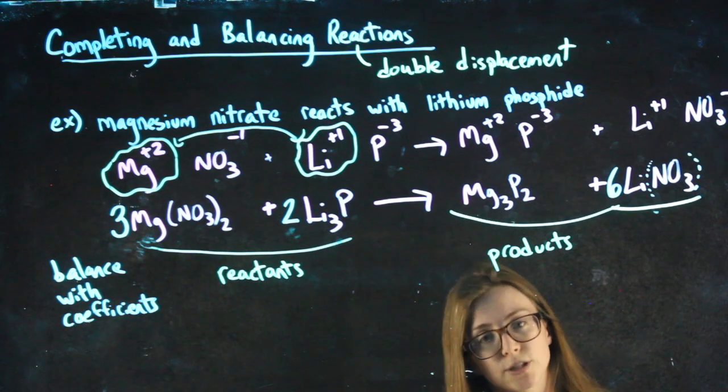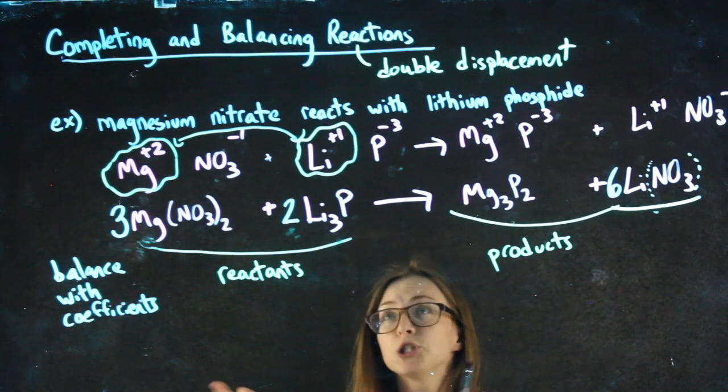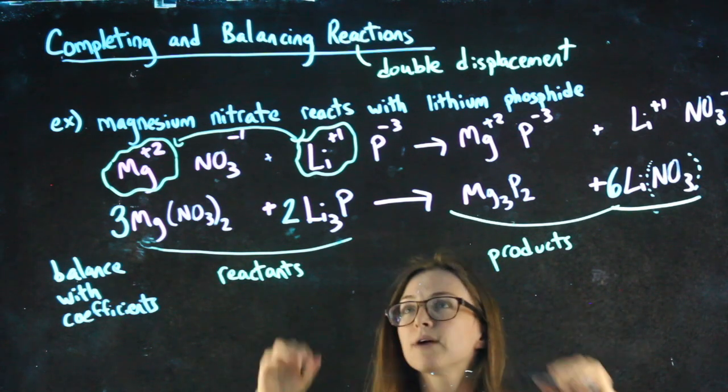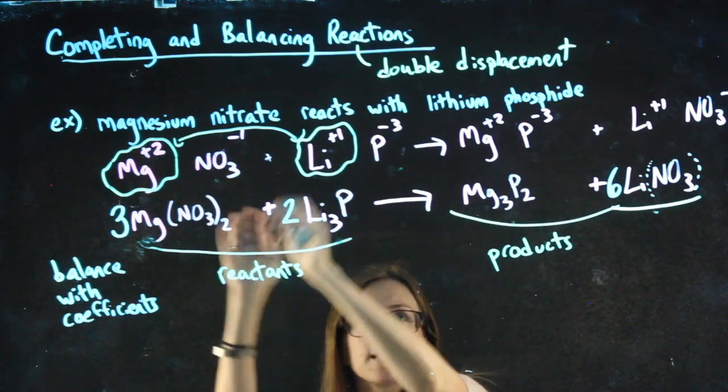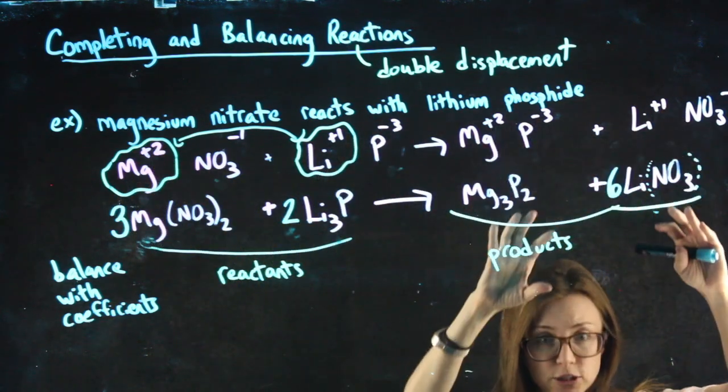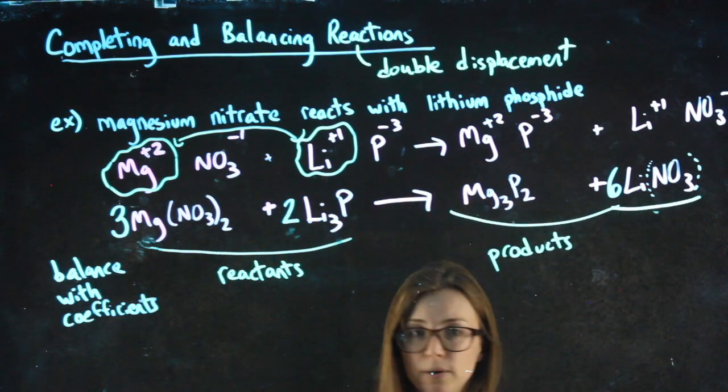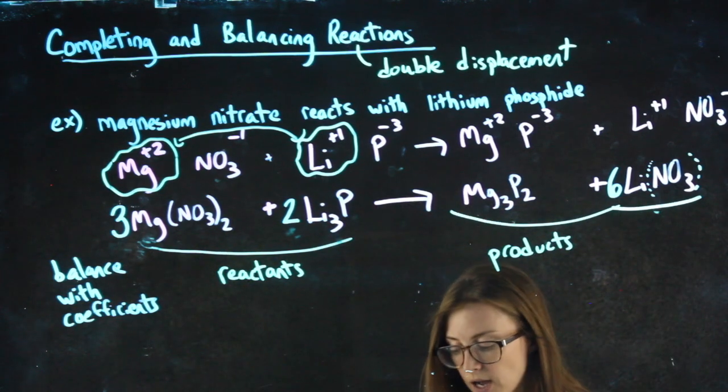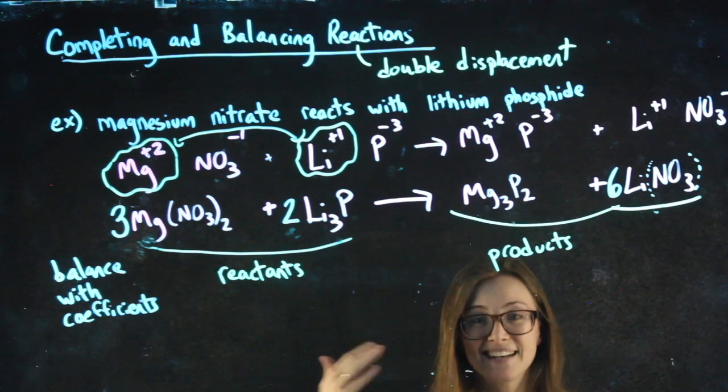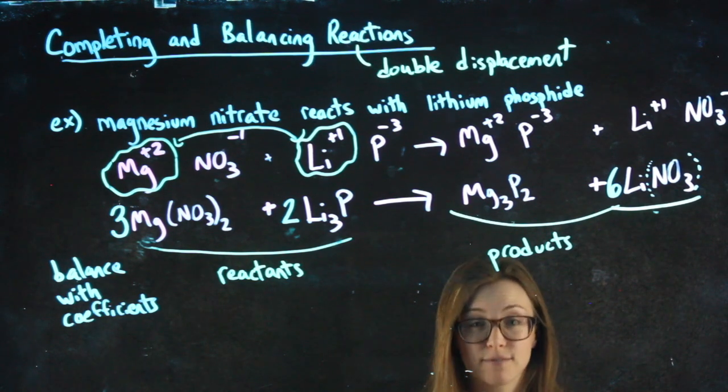I'm going to give you a bunch to practice. The general steps that I went through, right? Showing the ions, crisscrossing, switching partners, crisscrossing, and then picking something to balance and dominoing through. That always works. But it takes practice to get good and feel comfortable with it.